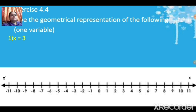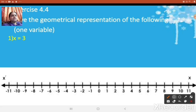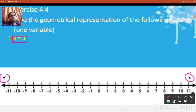The first question is given as x = 3. Now here the equation is given in one variable, but the geometrical representation we have to show using one variable as well as by two variables. The variable is taken as x. Therefore we have taken a number line here as x–x'. When you draw a number line, if your equation is given in terms of x, it will be x–x'. If in terms of y, then it will be y–y'.